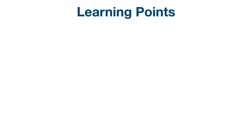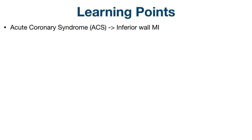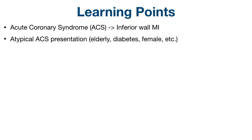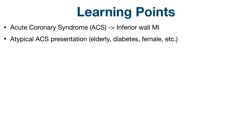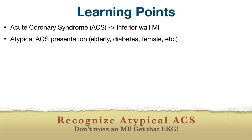Let's go over the key learning points. This was a case of acute coronary syndrome, specifically an inferior wall MI with ST elevations in the inferior leads 2, 3, and AVF. Be aware of atypical ACS presentations, especially in populations involving the elderly, diabetics, and females — they may not present with classic exertional crushing chest pain. Instead, they could present with epigastric pain, nausea, dyspepsia, or fatigue. This case was an example of that, where we had a patient with a history of diabetes presenting with epigastric abdominal pain that actually turned out to be an MI.